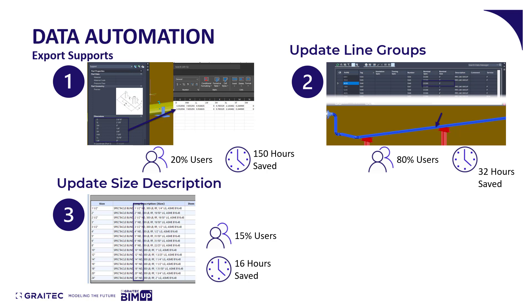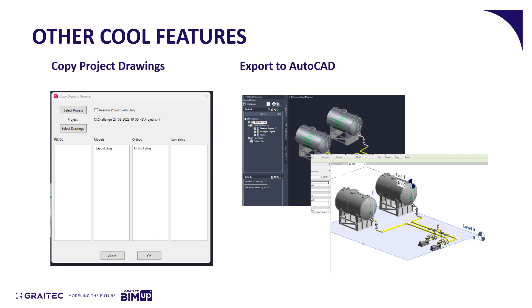There are various other tools in here as well. We have tools for copying project drawings from separate projects — if we've got data in a previous project that's completely relevant to the current one with the same setup, we can use the Copy Project Drawings feature. We select the project we want to copy information from, then select the drawings. This allows us to copy not just model drawings, but P&IDs, orthographics, and isometrics — all four different types of drawings.